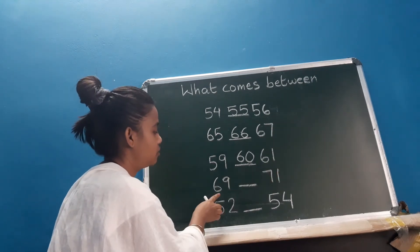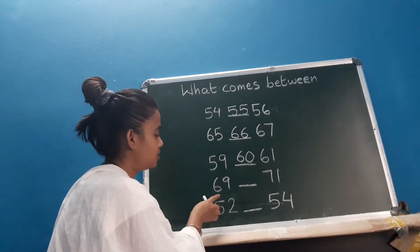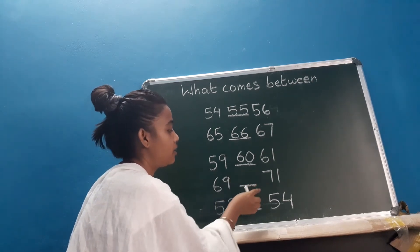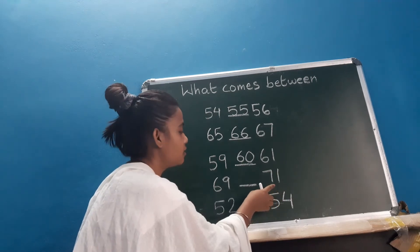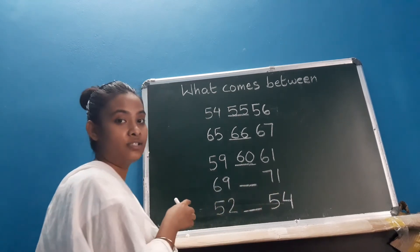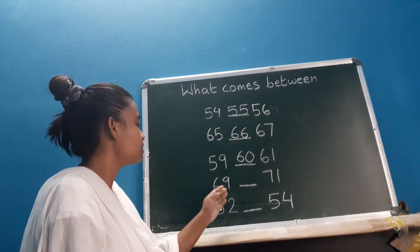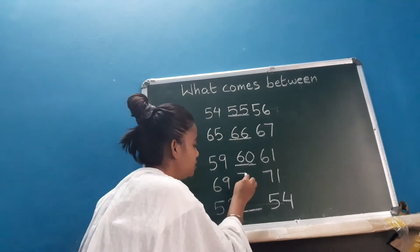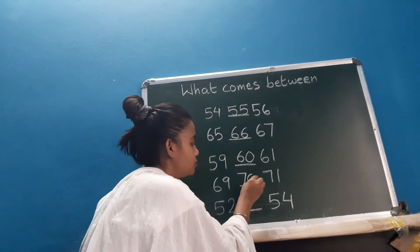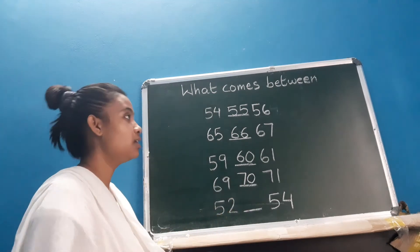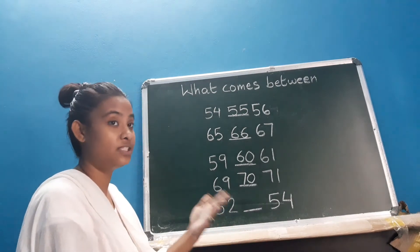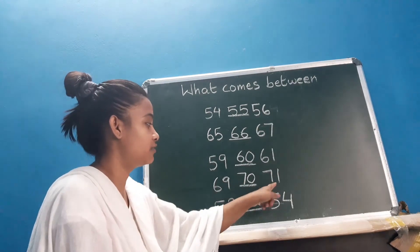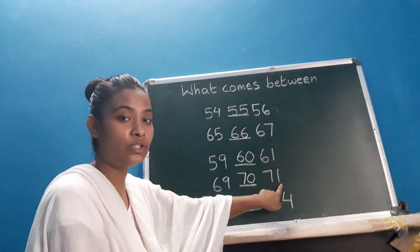Now the next. Which number is this? 69. And then here is a blank space and after that which number is this? 71. So after 69, which number will come? 70. When you do counting numbers: 69, 70, and then after that 71.